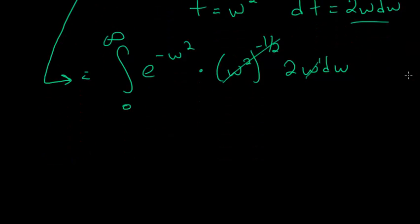So what we're left with is that the integral is equal to twice the integral from zero to infinity of e to the minus w squared dw.